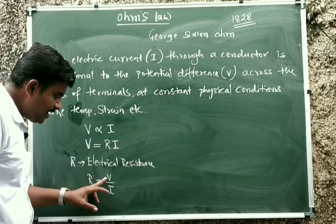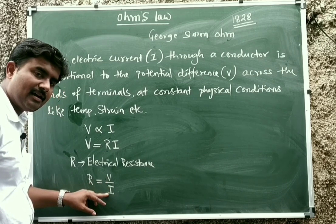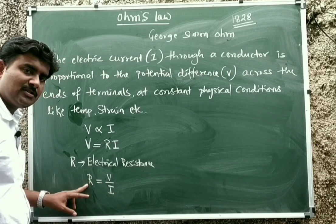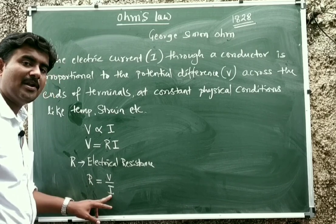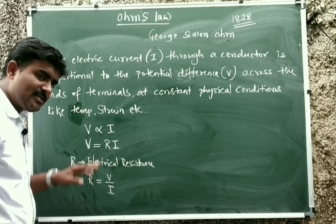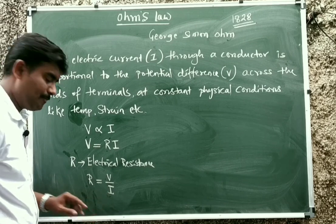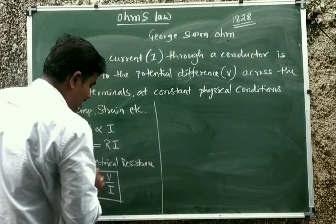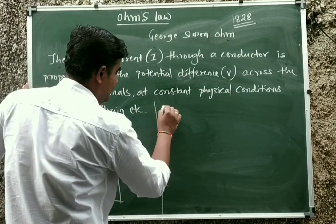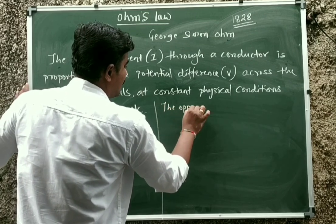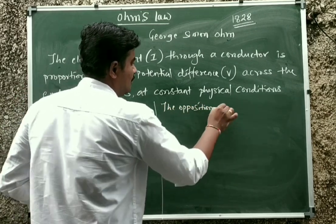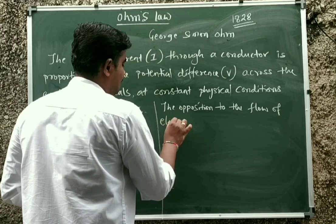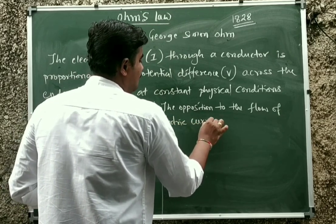Here, V is electrical potential difference and I is electrical current. The flow of electric current depends on resistance. If more is the resistance offered by the material, then less flow of electric current occurs. If resistance is less, then the flow of current will be more. Therefore, R equals V divided by I. In simple terms, electrical resistance is the opposition to the flow of electric current.